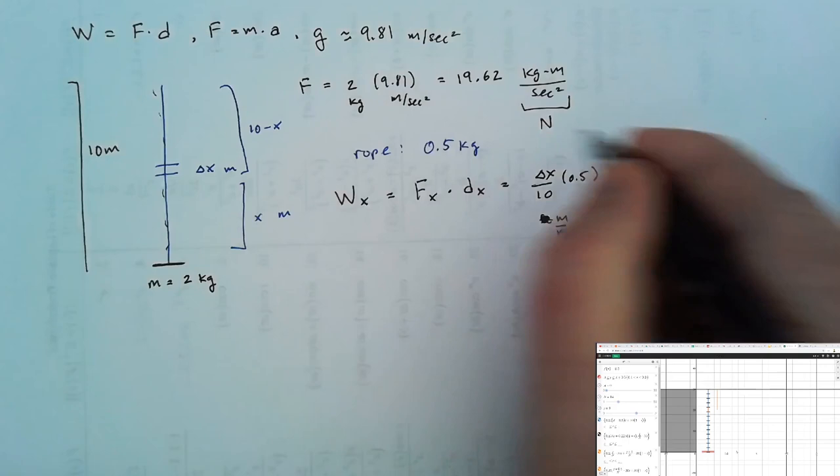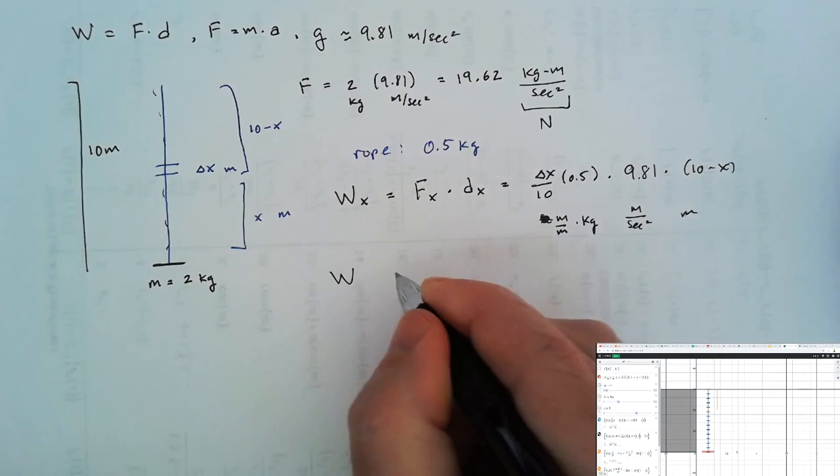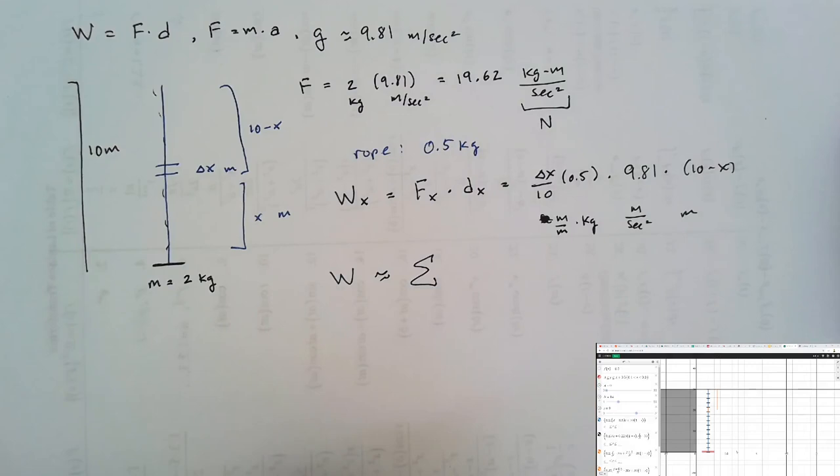and then times the distance, which would be 10 minus x meters. Then we add up all of those little work estimates to get a total estimate of the work done on the rope. This is a Riemann sum, which converges to a definite integral.